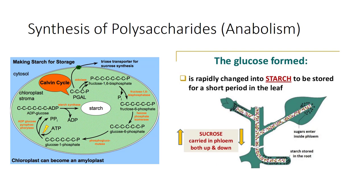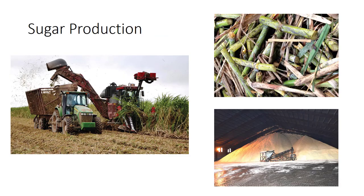In organs involved in long-term storage of starch, such as potato tubers and starchy seeds like wheat and rice, sugar moves from the phloem into the parenchyma cells, then enters amyloplasts, where it is re-polymerized to starch again.